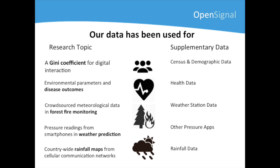The first example we chose is an ongoing research project from Sharon Richardson, a master's student from University College London. Her idea is to develop a Gini coefficient for digital interaction. If you're not familiar with the Gini index, it is a measure of social and economic inequality. To do this, Sharon is using data from our apps and other sources, including census data.